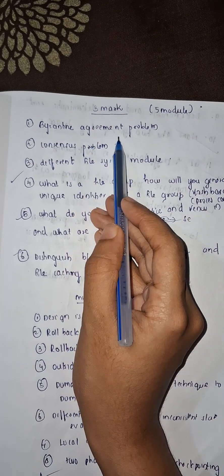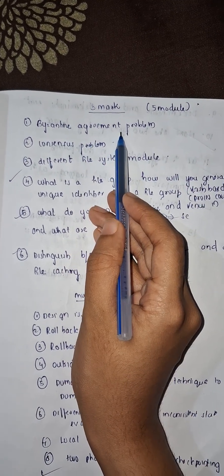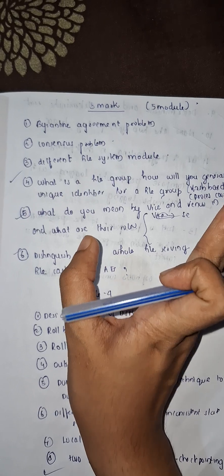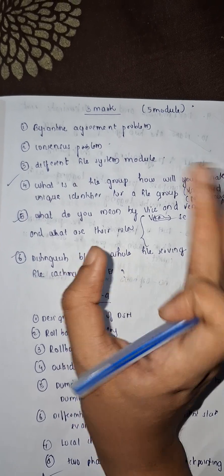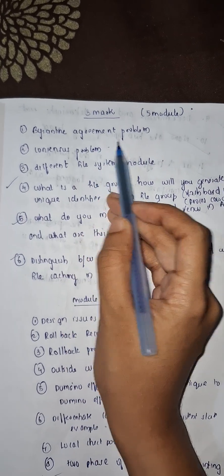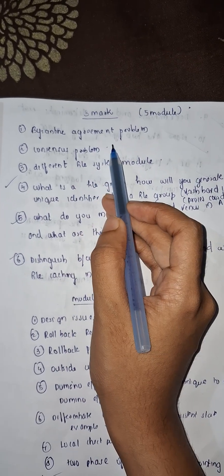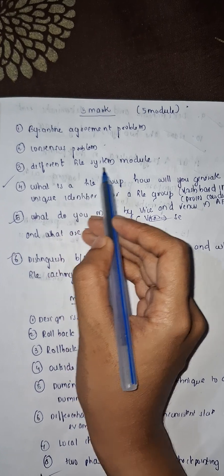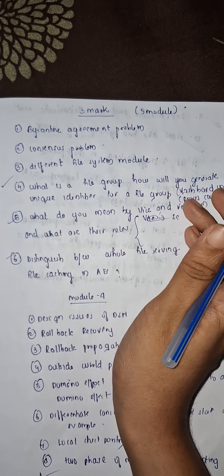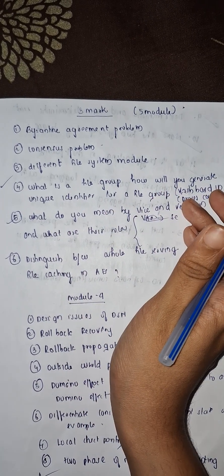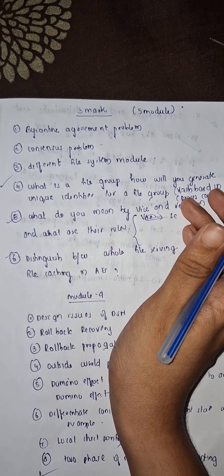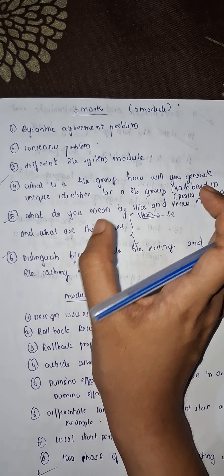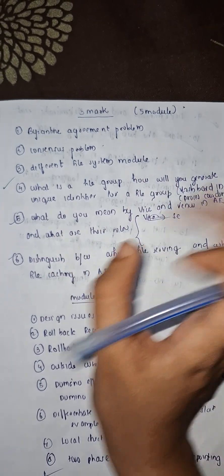Byzantine agreement problem — we already have done a video on that. Consensus problem we already have done. Different file system modules — distributed file system — we have studied 5 or 6 modules.